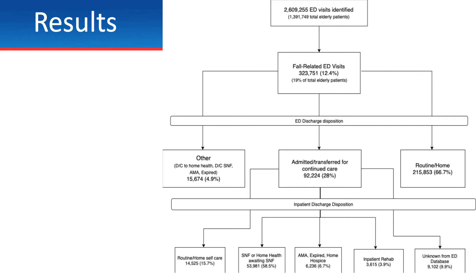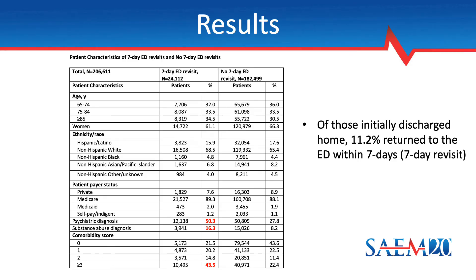Here's a flow chart outlining the path of care for fall patients. We can see that 2.6 million ED visits were identified, of which 12.4% were fall-related. Two-thirds of the fall patients were ultimately discharged home, and a little less than a third were admitted to the hospital. I've included the inpatient discharge disposition breakdown in the last row as reference. Of those initially discharged home, 11.2% returned to the ED within seven days.